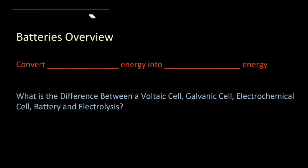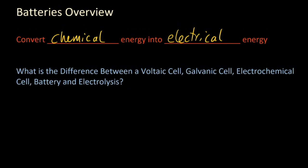This is just some odds and ends from Section C on batteries. They convert chemical energy into electrical energy. What is the difference between a voltaic cell, galvanic cell, electrochemical cell, a battery, and electrolysis?